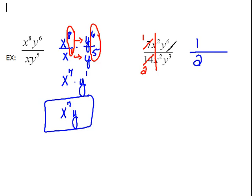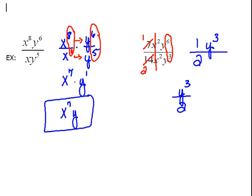As far as our y's, we are dividing like bases so we subtract the exponents: y to the 6th minus 3 is 3rd power. It would be better to write the final answer as y cubed over 2.